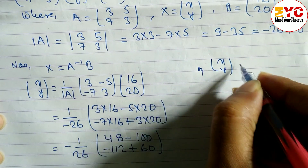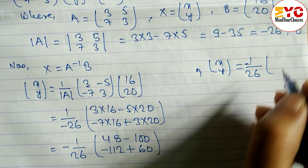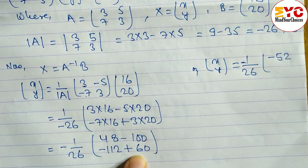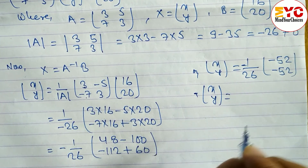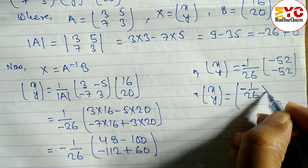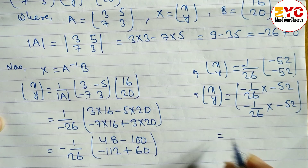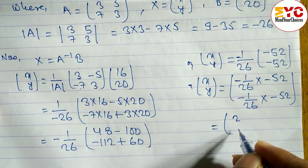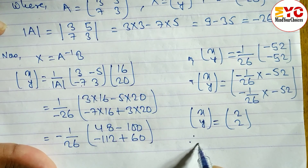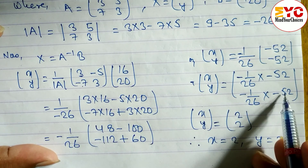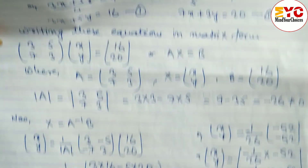So we have x y = 1 over minus 26 times [minus 52; minus 52], since 48 minus 100 = minus 52 and minus 112 plus 60 = minus 52. Multiplying: minus 1/26 × minus 52 = 2. Therefore x = 2 and y = 2.